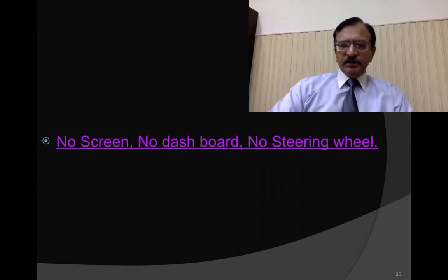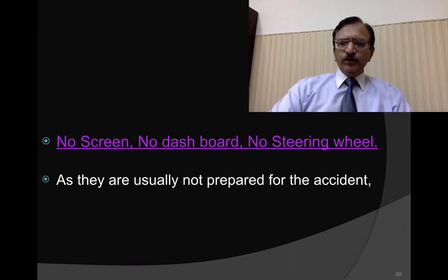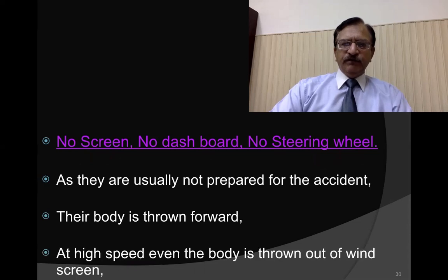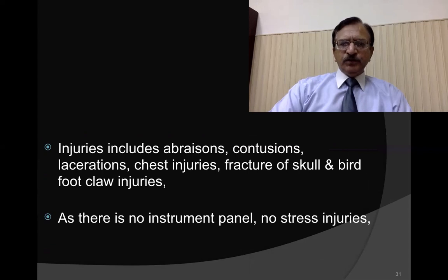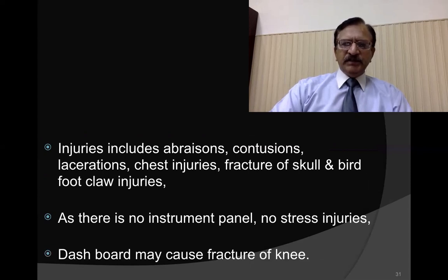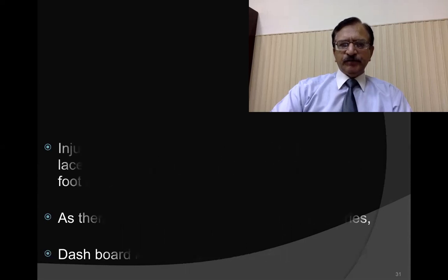Regarding injuries to co-passengers — the front seat occupant sitting beside the driver has no dashboard or steering wheel in front, and is usually not prepared for the accident. Their body is thrown forward, and at high speed may be thrown out through the windscreen. Injuries include abrasion, contusion, laceration, chest injury, fracture of the skull, and bird-foot claw injuries. The dashboard may cause fracture of the knee, and if the head strikes the dashboard or windscreen, coup and contra-coup injuries will result.